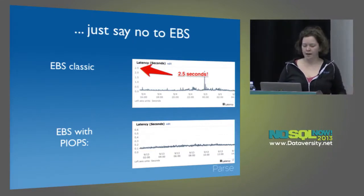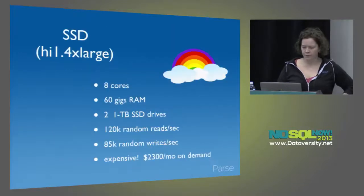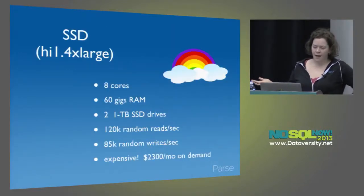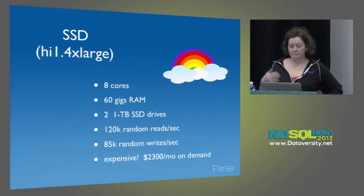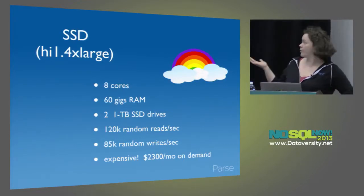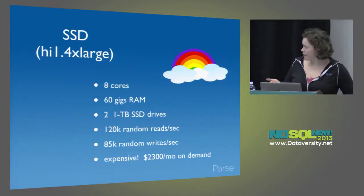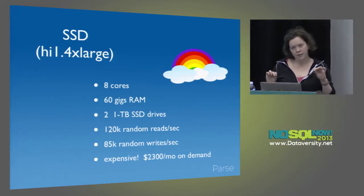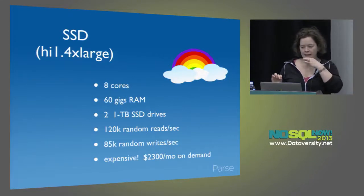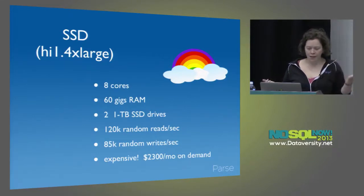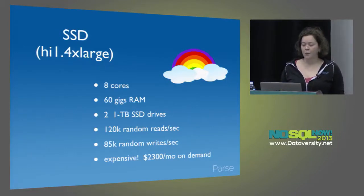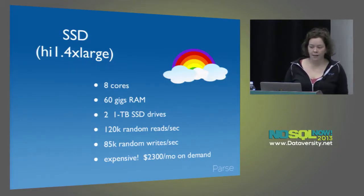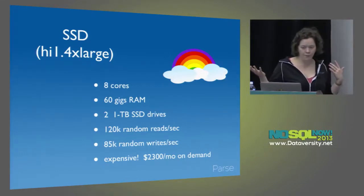Your real options are SSD, provisioned IOPS, or ephemeral. The SSD flavor is the hi1.4xlarge, and it is a beast — eight virtual cores, 60 gigs of RAM, and a couple of SSDs. They estimate 120,000 IOPS for random reads per second and 85,000 IOPS for random writes per second. It's also really expensive — about twice as much as the M2.4xlarge, which has slightly more RAM, which, as I said, is your most important thing.